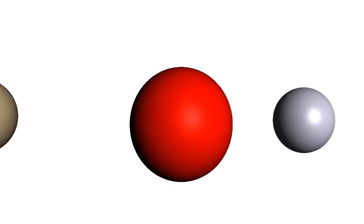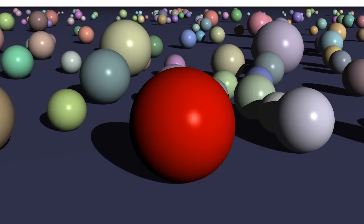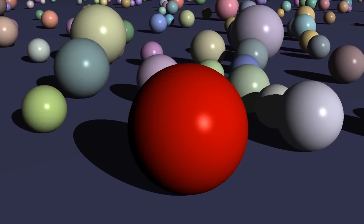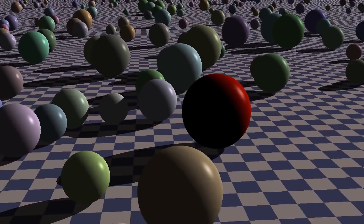You can add more spheres. You can put them on a plane stretching away to infinity. Then you can texture the plane with stripes, or rings, or checkers.